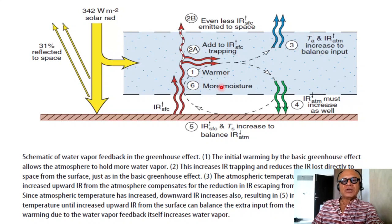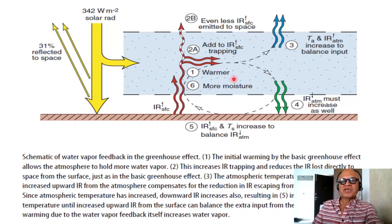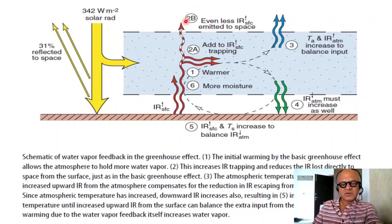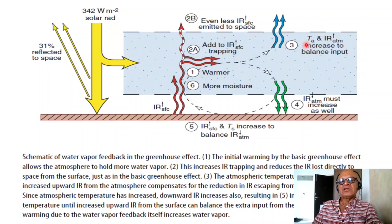Increasing greenhouse gases warm the atmosphere and the surface, but then amplification comes from increased moisture because of a warmer atmosphere, which allows the atmosphere to adjust and balance for the reduced longwave from the surface. When we did this before without the water vapor, the atmospheric temperature would have to do all the work to increase the outgoing longwave to compensate, but if you add moisture that gives you some added warming.